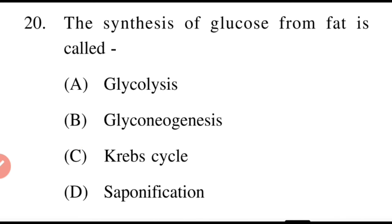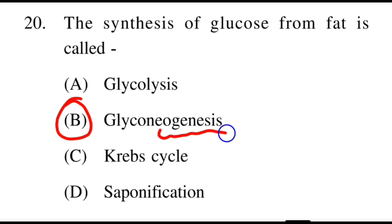Next question: The synthesis of glucose from fat is called? Options: A: glycolysis, B: gluconeogenesis, C: Krebs cycle, D: saponification. The right answer is B, gluconeogenesis. 'Genesis' means formation of something, so gluconeogenesis is the synthesis of glucose from fat.